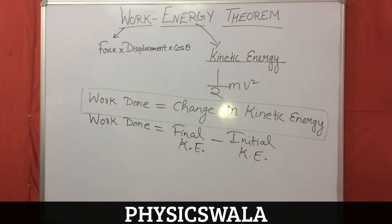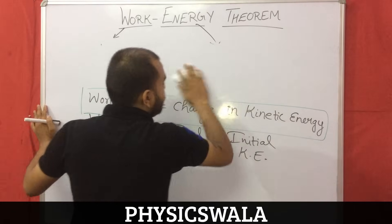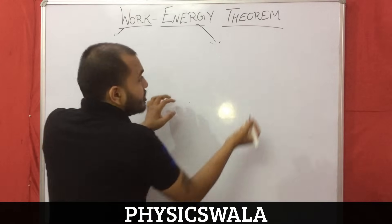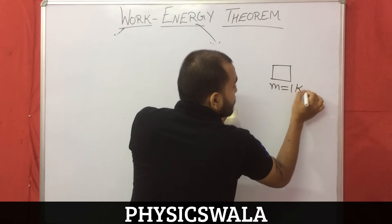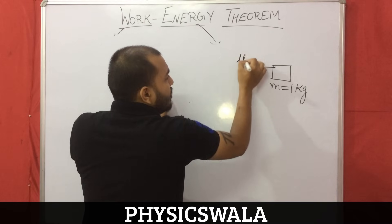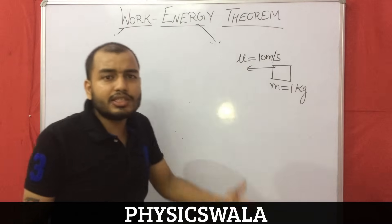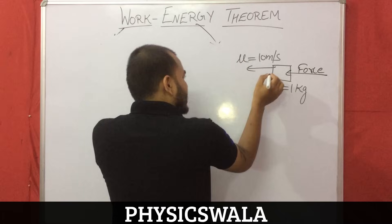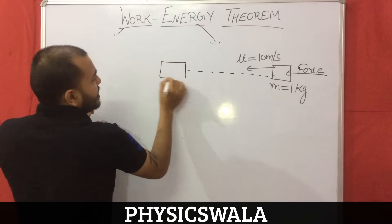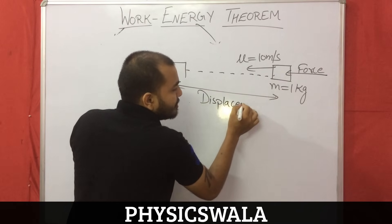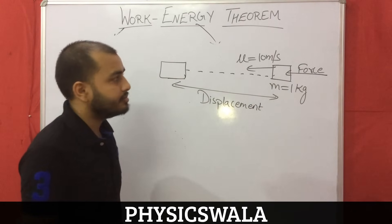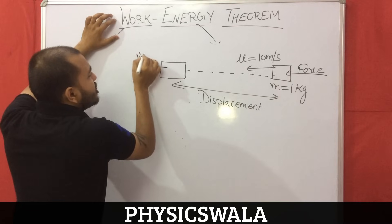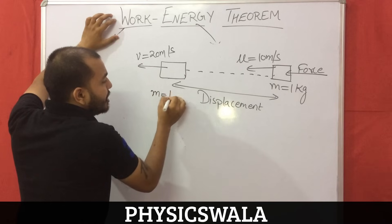Let us take a numerical example — a very simple one. Suppose the block we were talking about has a mass of 1 kg. It is already moving with a speed of 10 meters per second. U always denotes the initial speed. I apply a force on it and keep pushing it over this displacement, then I remove the force. Till the time I am applying force, its speed will be increasing. Suppose the speed has now become 20 meters per second. The mass will still remain 1 kg. Now the question is: what is the work done?